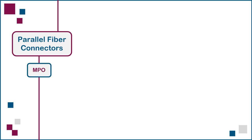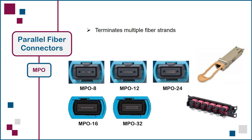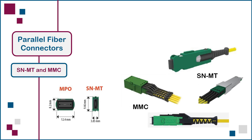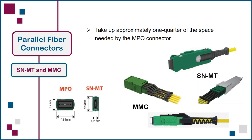The MPO parallel fiber connector terminates multiple fiber strands, most often 8 or 12, with 16, 24, or 32 also available, as shown here. The continuous growth in network performance requires more fibers in the same amount of space on both patch panels and optical transceivers, which means we need parallel connectors with greater density than the MPO. The 16 fiber SNMT and MMC are examples of the next generation of parallel connectors, taking up approximately one quarter of the space needed by the MPO, making it possible to insert four SNMT or MMC connectors, or 64 fibers, into a patch panel adapter or optical transceiver that is the same size as an MPO adapter or transceiver, as shown here.